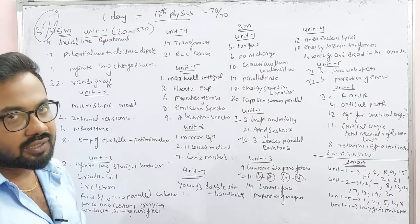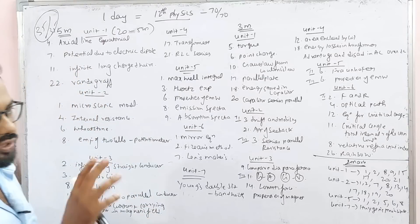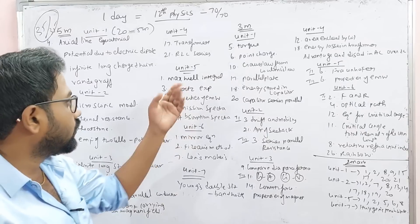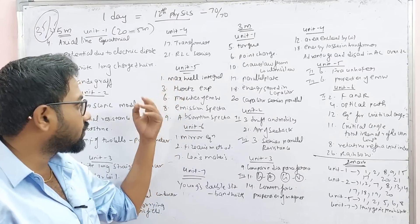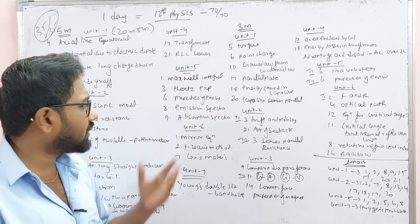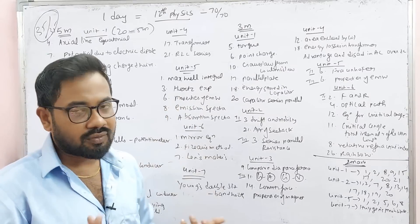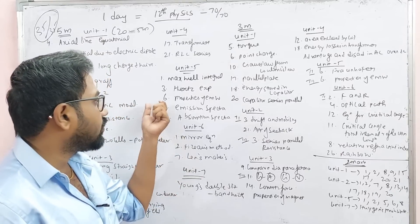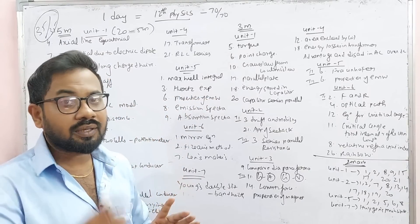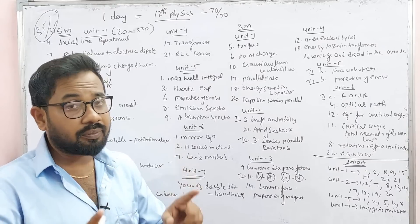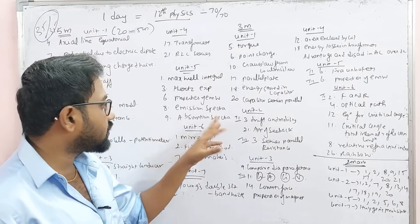Unit 5 is the AC Single Phase Generator. M12 equals M21 — this is the Mutual Inductance. Unit 5 also covers Maxwell's Integral Form. If you have access to the 5th lesson, it is easy. The 5th lesson is Emission. The 9th lesson is Absorption.